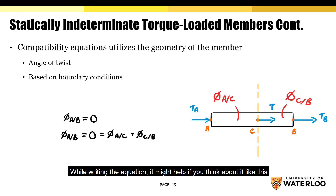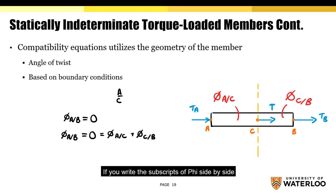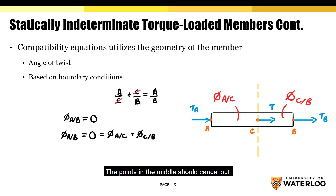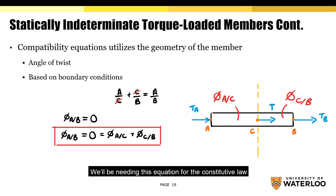While writing the equation, it might help to think about it like this: if you write the subscripts of phi side by side, the points in the middle should cancel out, such that you end up with the original notation. This part represents the compatibility equation for this particular example, and we'll be needing this equation for the constitutive law.